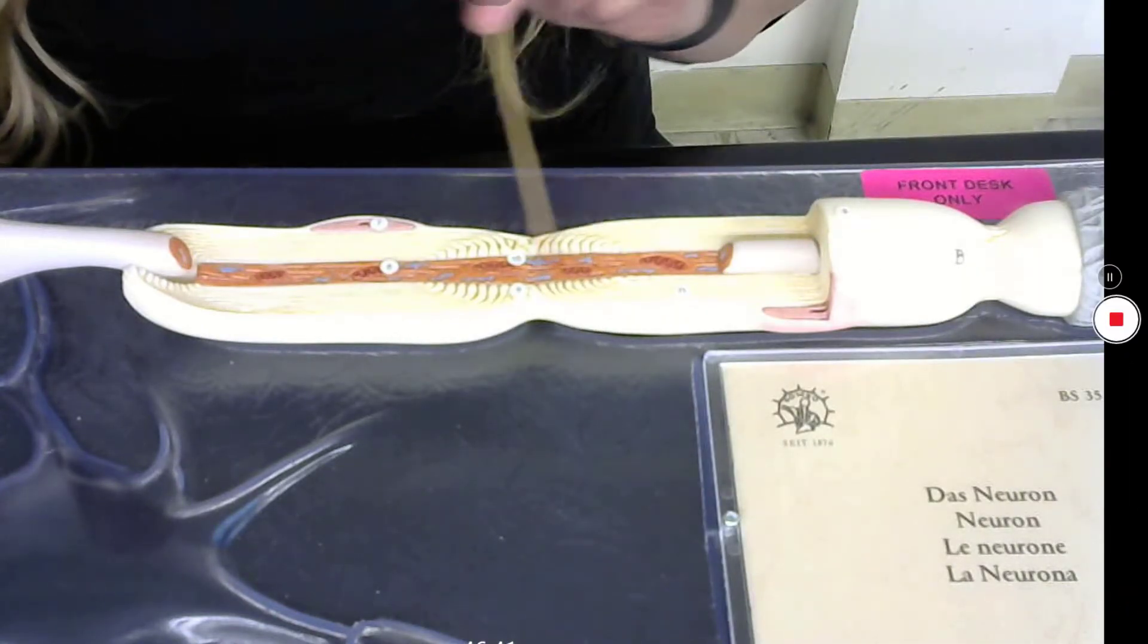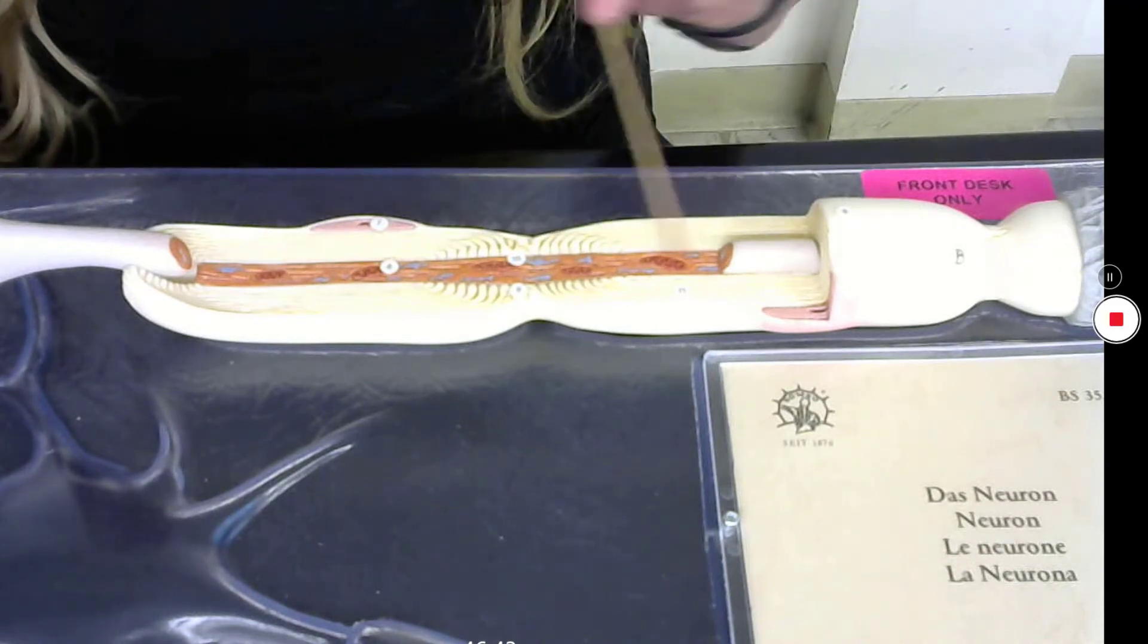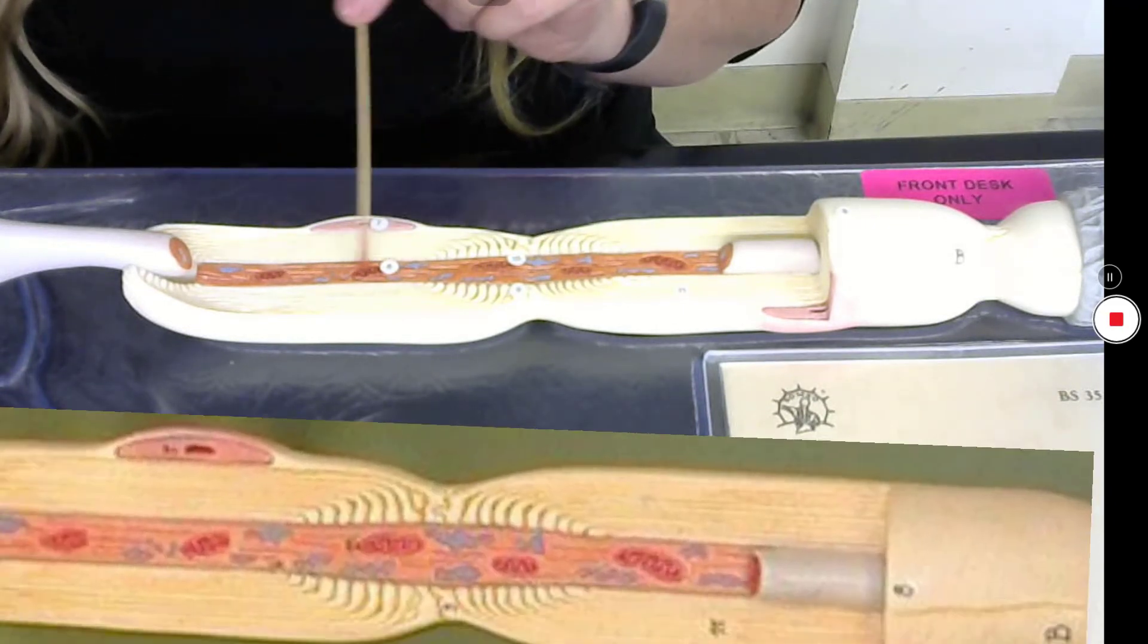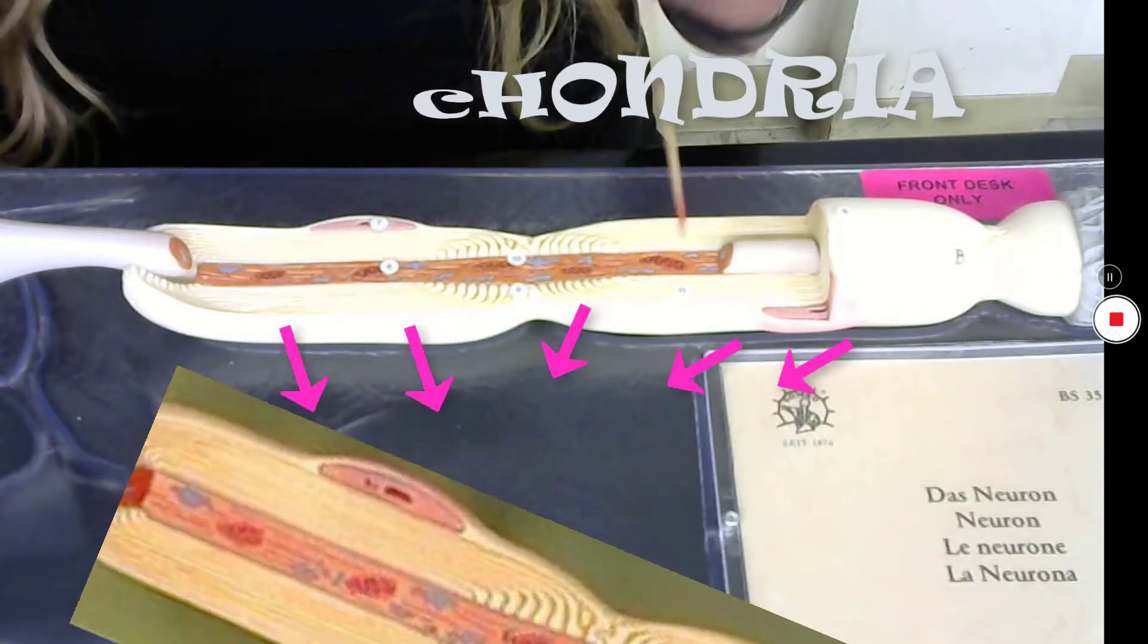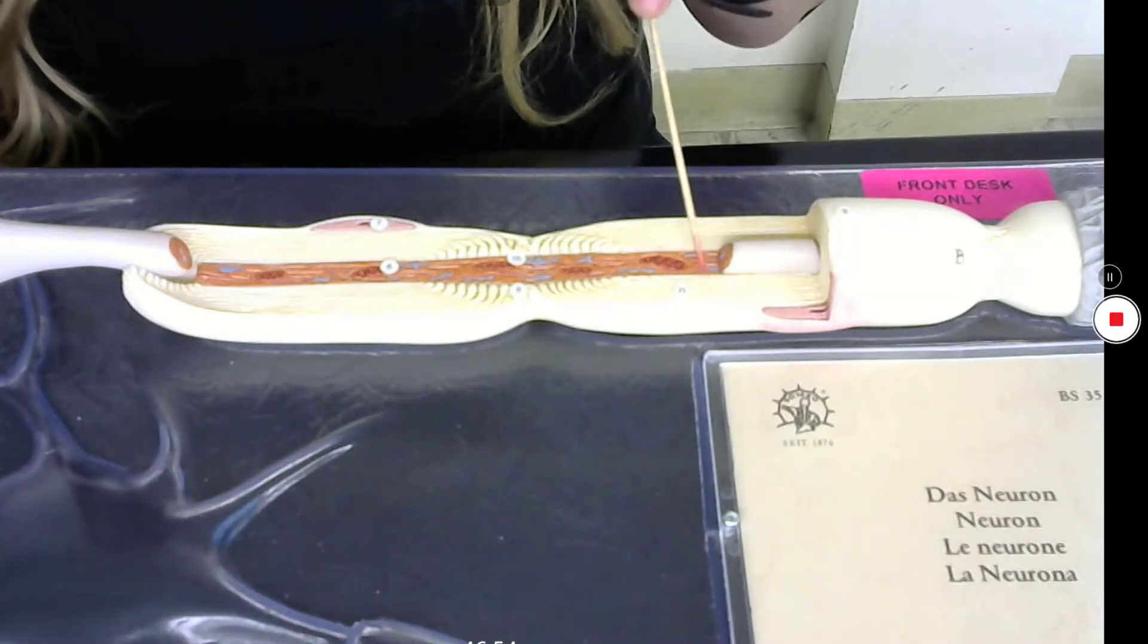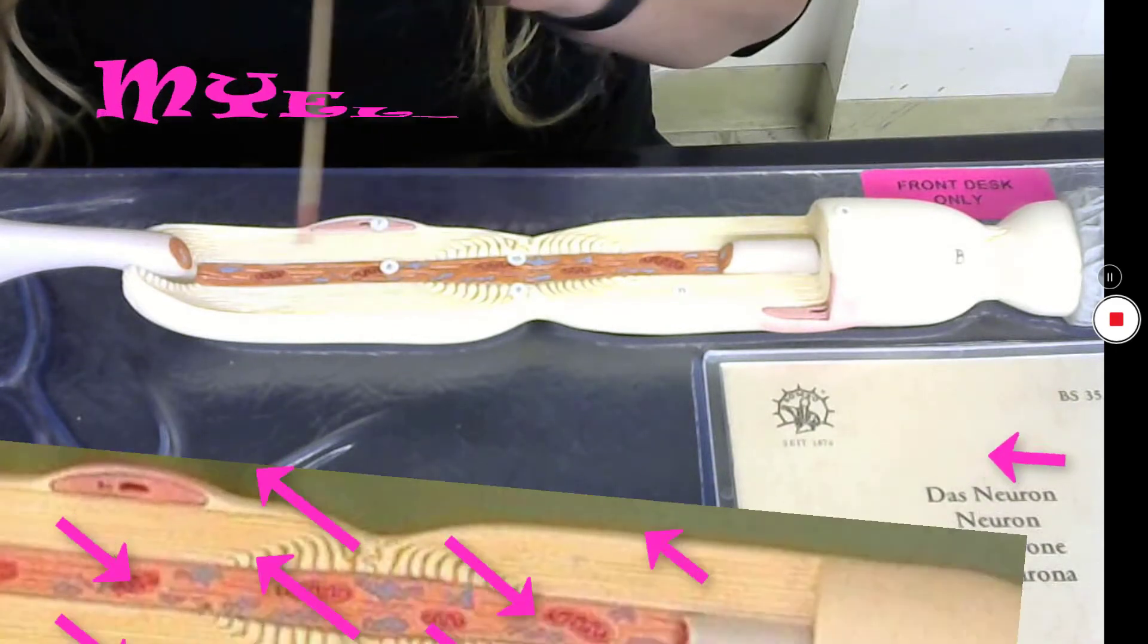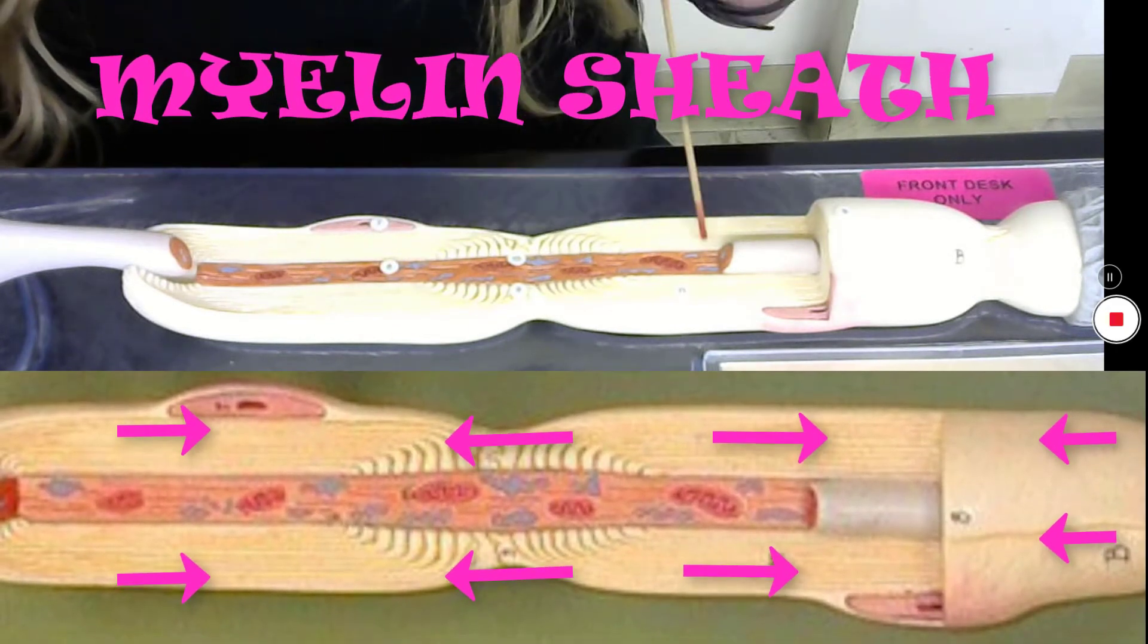Inside of the axon, in this portion that has been cut away, I can see I have little mitochondria that are in here. And this portion here, these layers, this is the myelin sheath.